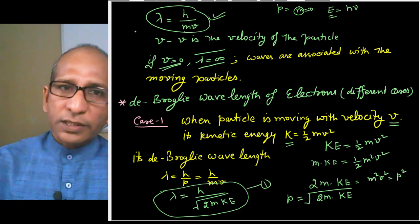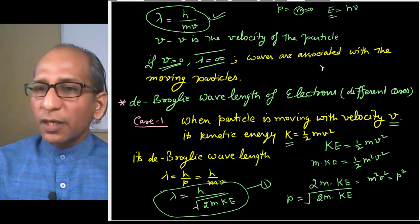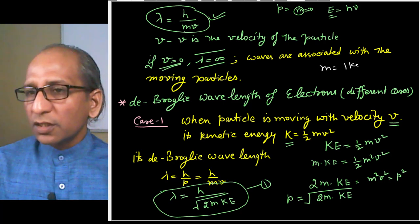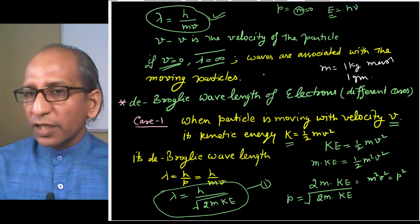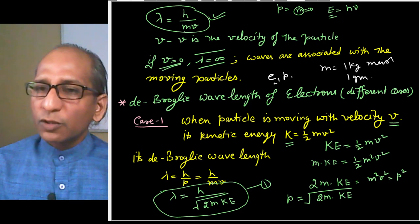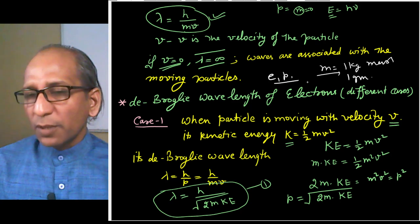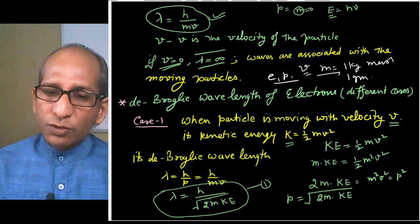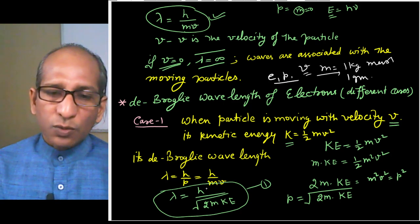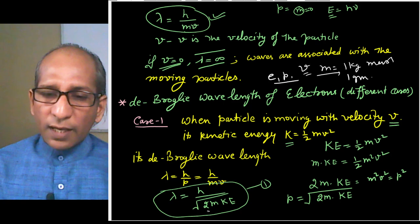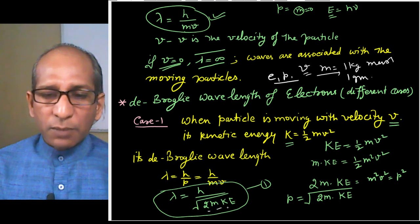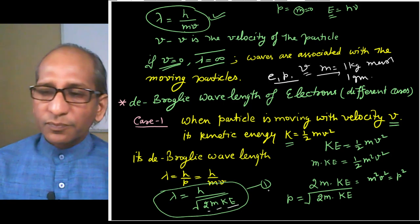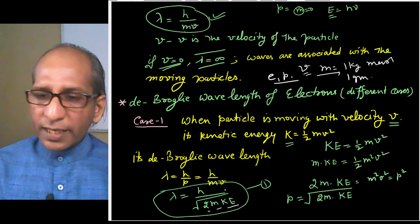Multiplying both sides by m: m·KE = ½m²v². So 2m·KE = m²v² = p². Therefore p = √(2m·KE). Substituting into the De Broglie formula: λ = h/√(2m·KE). This is the first formula for any materialistic particle moving with velocity v. Planck's constant h = 6.63 × 10⁻³⁴ J·s.